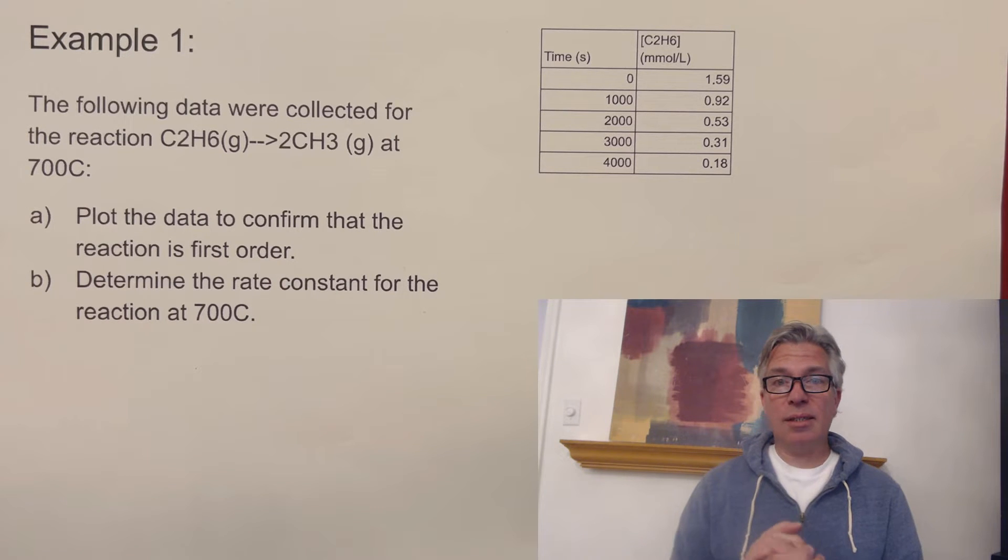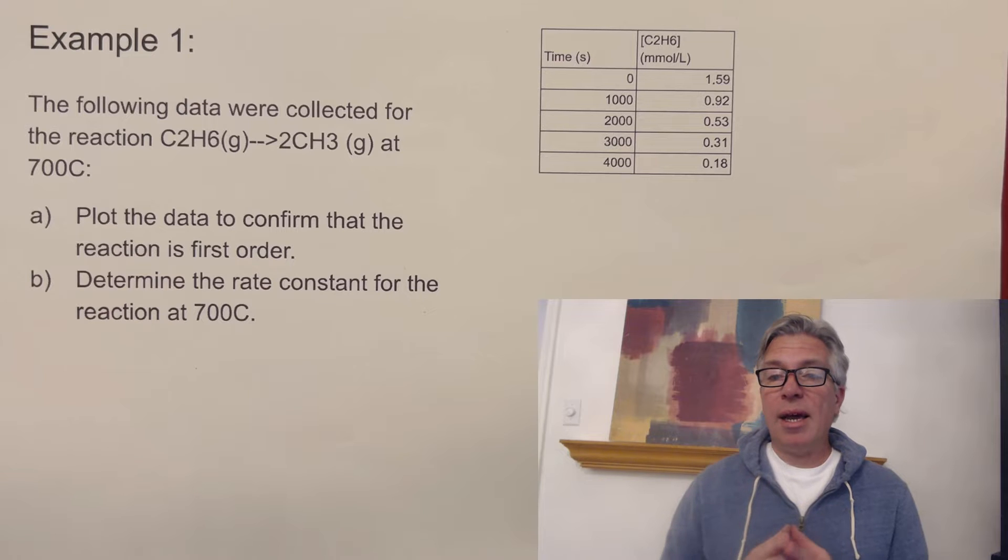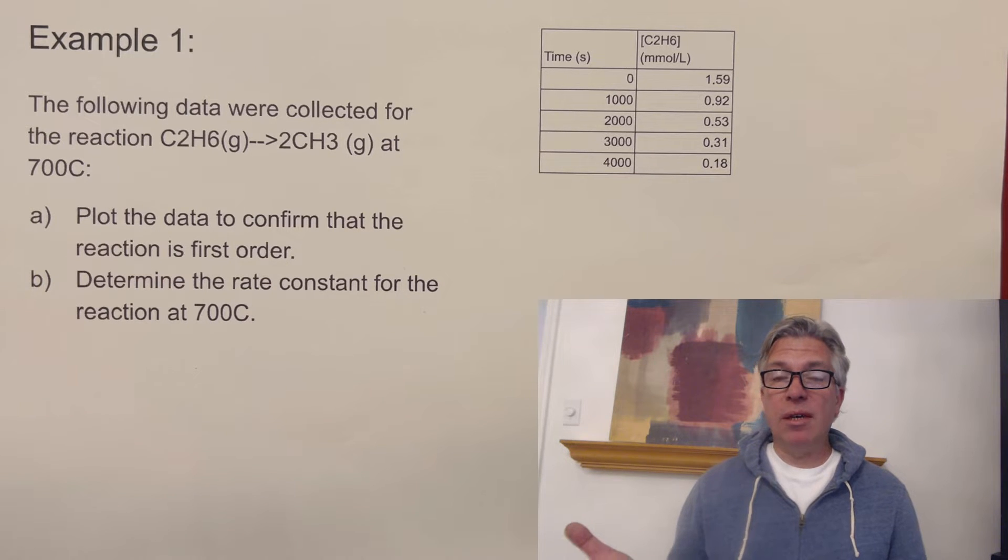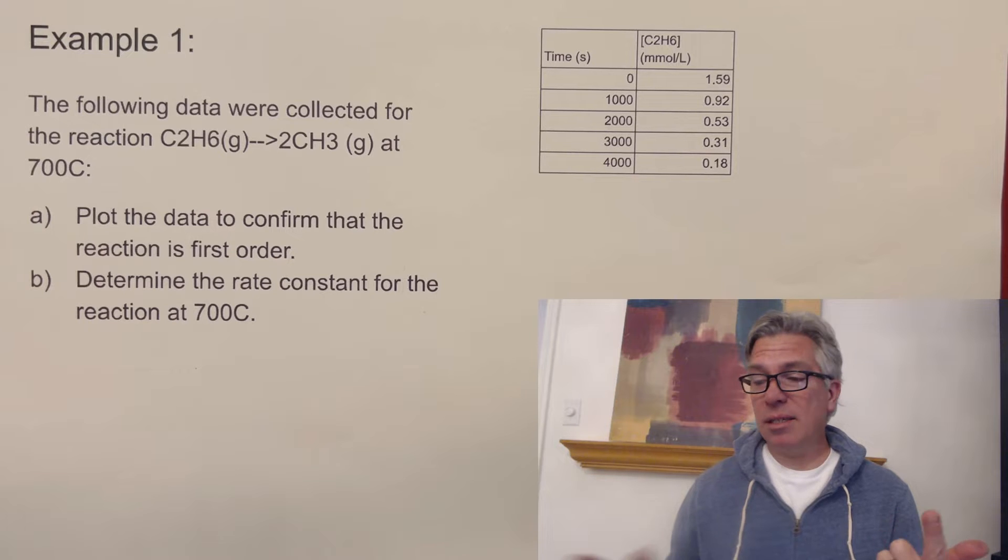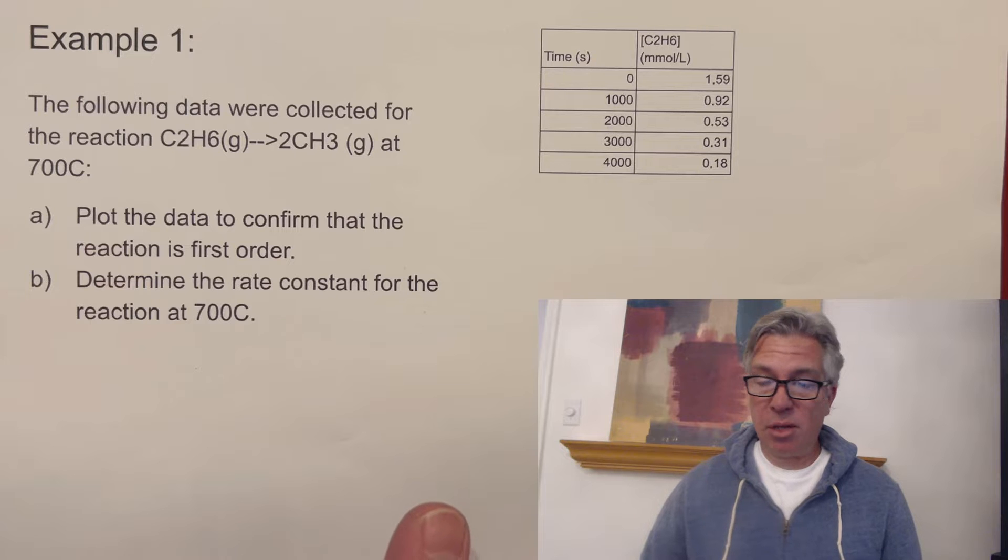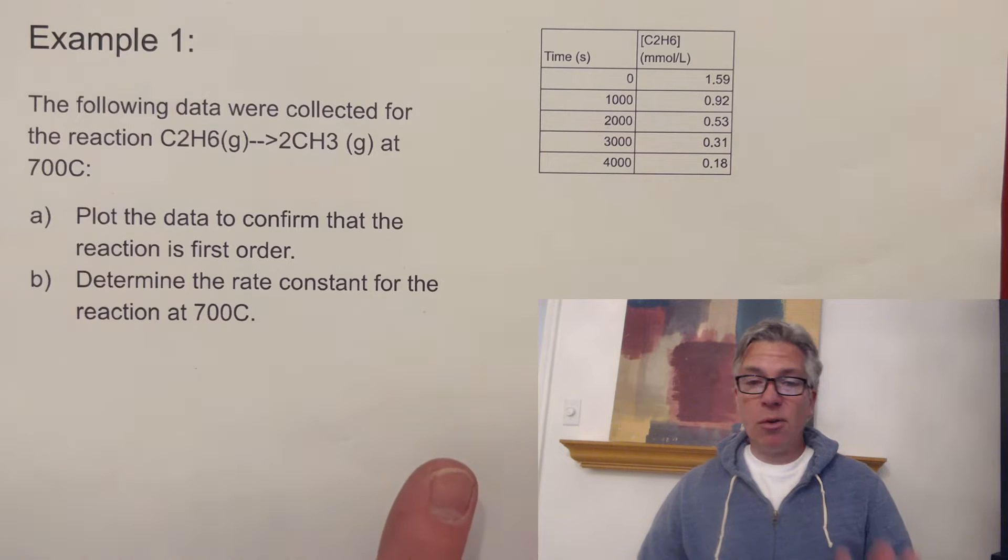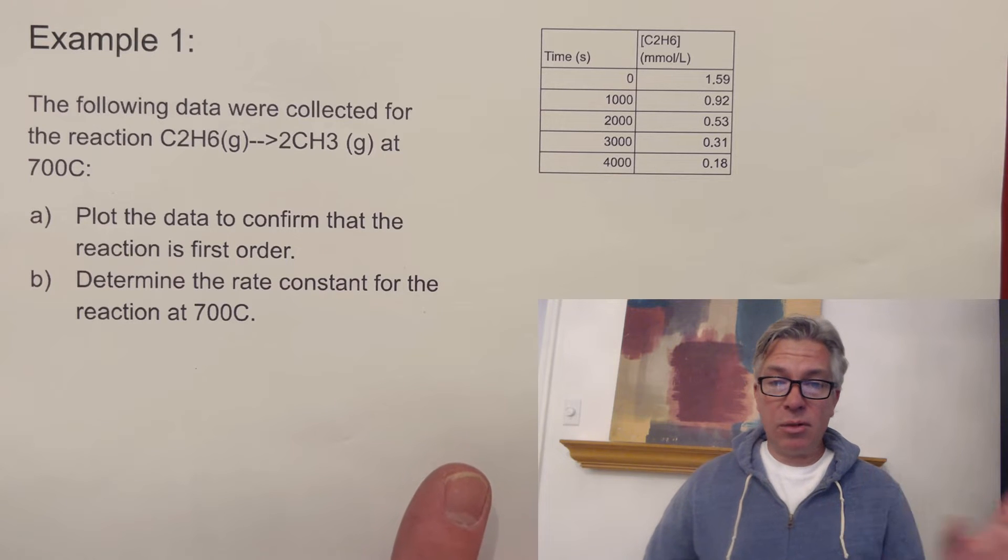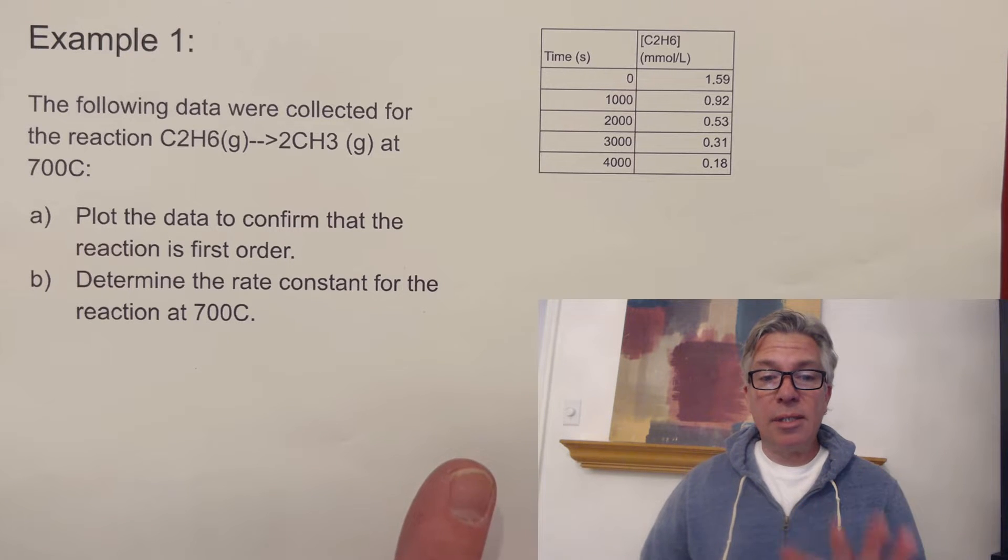And we learned that their rate laws are all unique. And the data that those reactions produce for each order produces graphs that have distinctive shapes. And if you manipulate those graphs, you can find which one is a linear graph. And if you know which one is linear, that will not only tell you which order the reaction is, but it'll tell you things like the rate constant and help you do your problem solving. And so today I'm really just focusing on first order reactions.